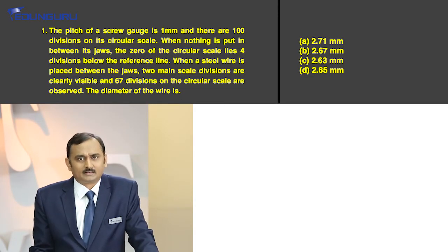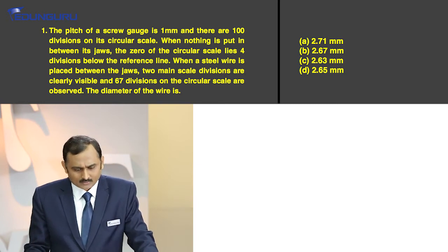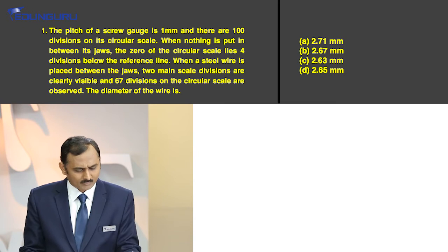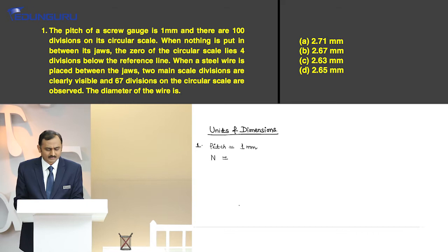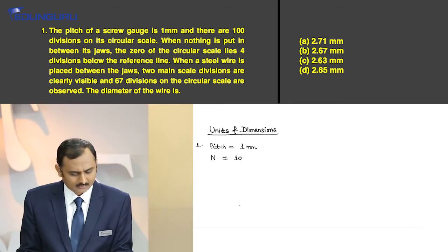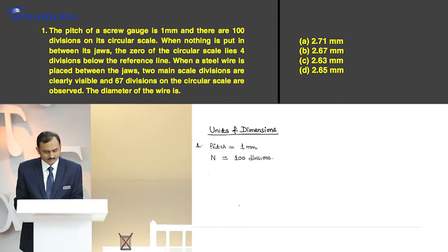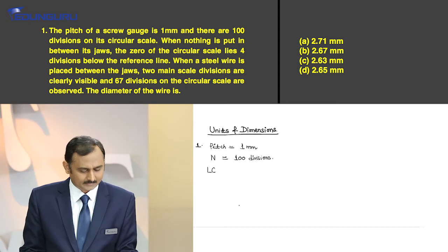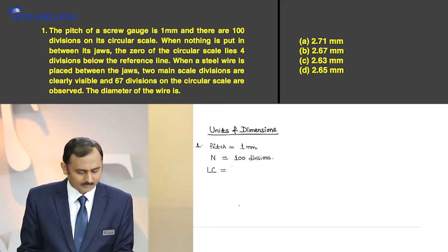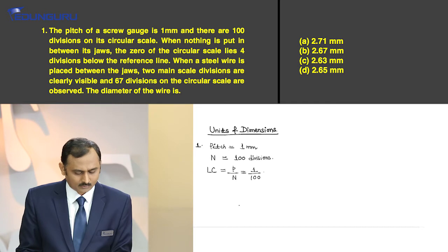This question is based on measurements — specifically on screw gauge. You have to comprehend the data: pitch is 1 mm, number of divisions N is equal to 100. First of all, we will find the least count of the screw gauge. Least count LC is equal to pitch upon number of divisions — it's 1 upon 100, or 0.01 mm.